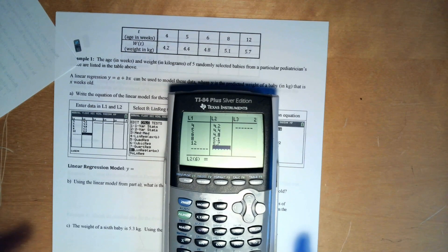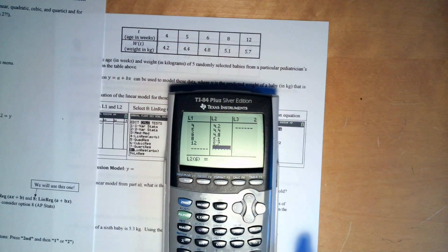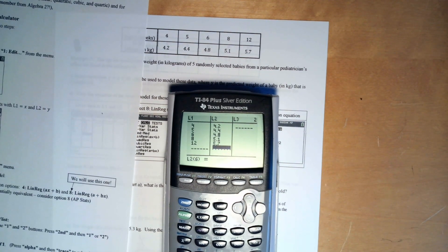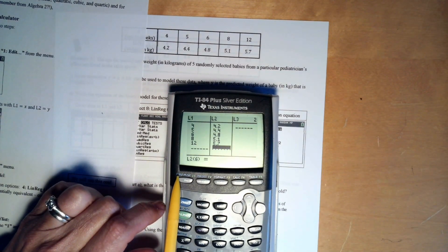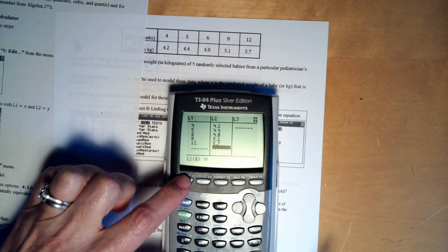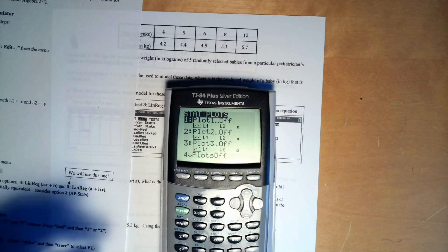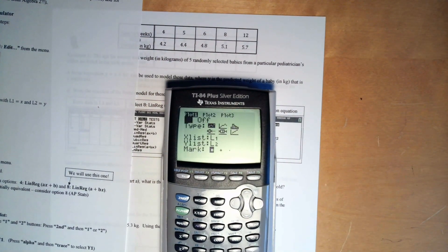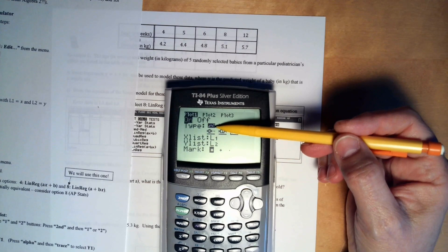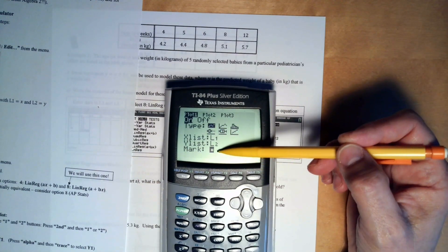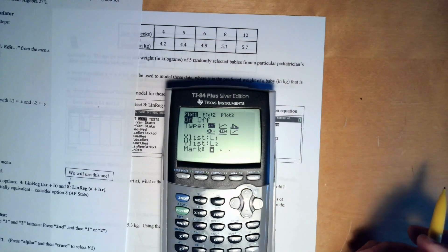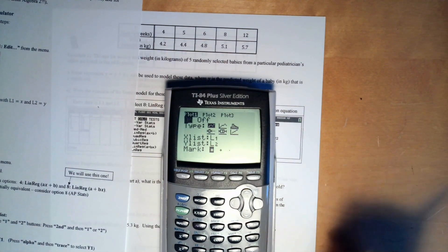Now we want to be able to look at the data to go ahead and see what the heck's going on, like what does it look like? So we want to turn this stat plot on right here. We're going to have to press blue and then that button. We want to press enter on number one and we want to turn it on. And so right now it's going to give us a scatter plot of list one and list two.